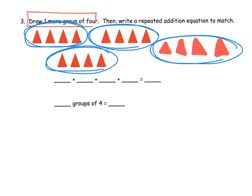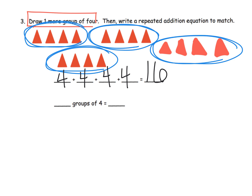Now we're going to write our repeated addition: four plus four plus four plus four, because we have this group, this group, this group, and this group — four groups. Let your students count up the total number of triangles. They're 16. So down here: how many groups of four? We have four groups of four, and that equals 16. You can clearly see how this is leading to multiplication.